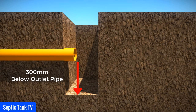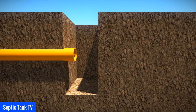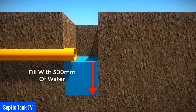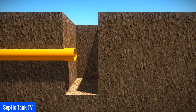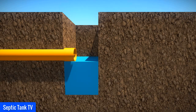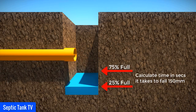Then fill the 300 millimeter square section of the hole to a depth of at least 300 millimeters of water and allow it to seep away overnight. The next day, refill the hole once again with water to a depth of at least 300 millimeters, then observe the time in seconds that it takes for the water to seep away from 75 percent full to 25 percent full — that's roughly a fall of about 150 millimeters.